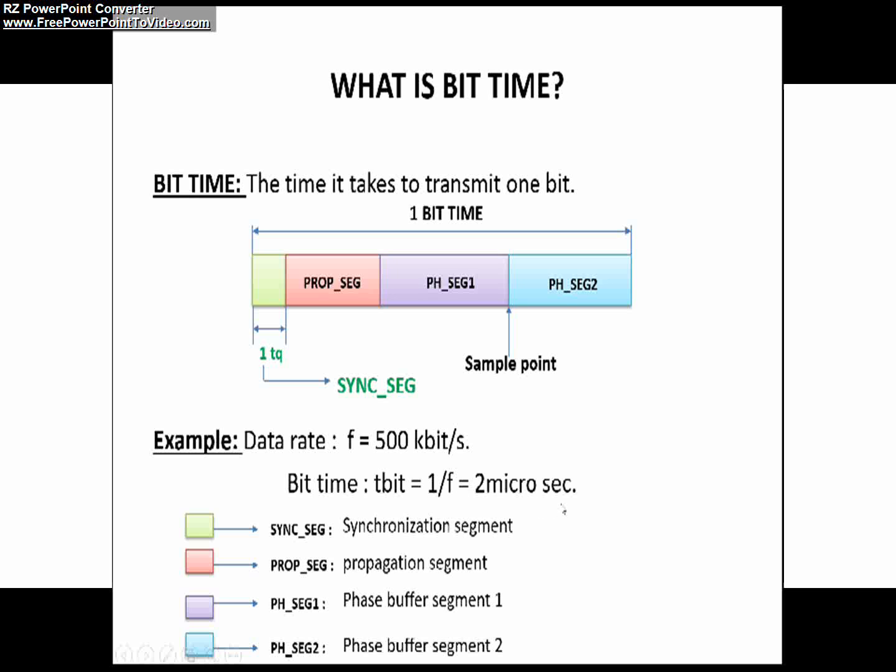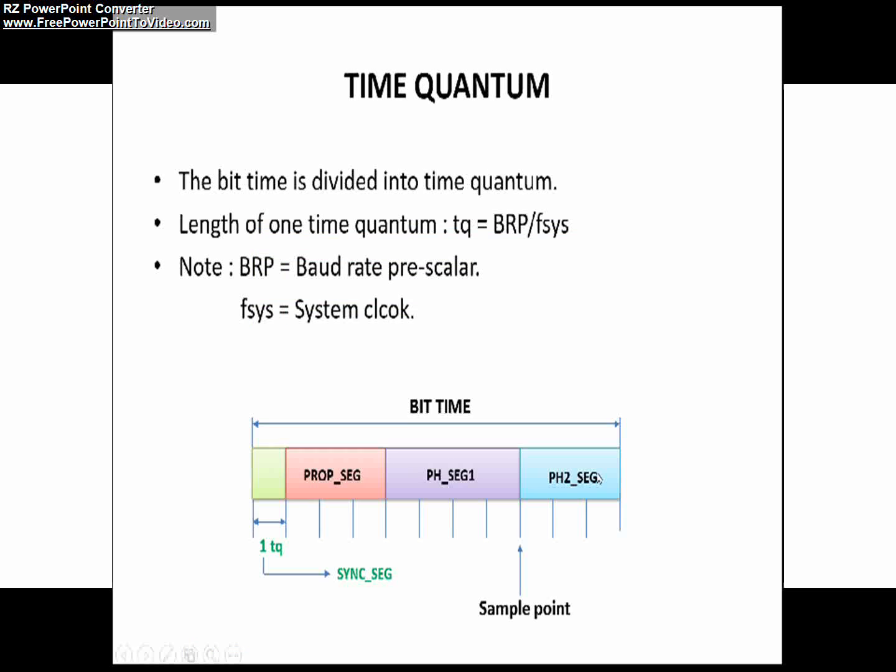That means to transmit a single bit, we need 2 microseconds in a CAN network. Now let's understand time quantum. As I already said, time quantum is the fixed unit of time derived from the oscillator period.